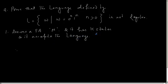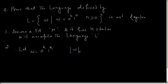The next step is to take a sufficiently long string w from the given language, where the number of symbols in w should be greater than or equal to k. Let us take w as 0 to the power k and 1 to the power k. The total number of symbols in w is 2k, which is obviously greater than or equal to k, so this constraint is satisfied and w is sufficiently long.